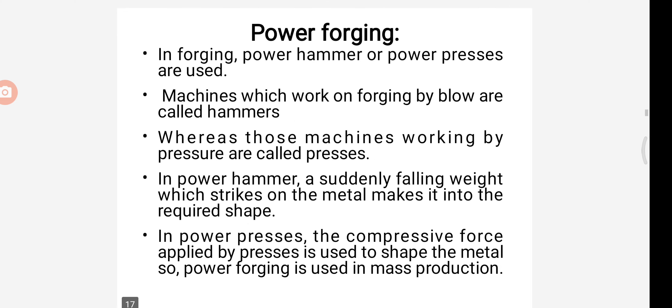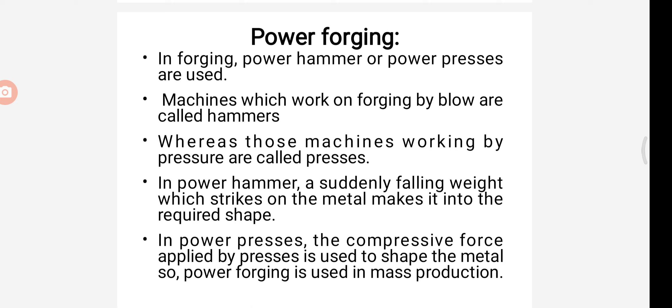Next, we are going to see about what is power forging. In power forging, power hammer or power presses are used. Machines which work on forging by blow are called hammers. Whereas, those machines working by pressure are called presses. In power hammer, a sudden falling weight which strikes on the metal makes it into the required shape. In power presses, the compressive force applied by presses is used to shape the metal. Power forging is used in mass production. Thank you. We can see the next topic in next video.